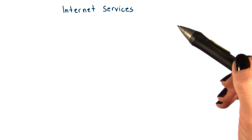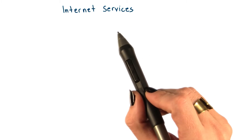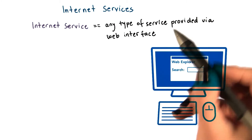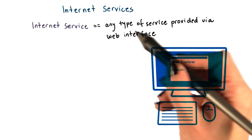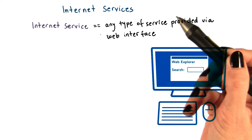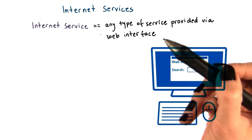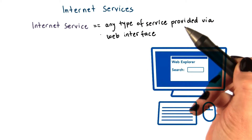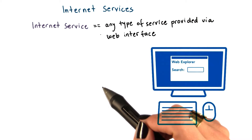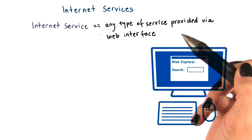In the context of data centers, let's first talk about internet services. An internet service is any type of service that's accessible via web interface — from checking current weather conditions at weather.com, to searching or checking email via Google search and mail services, to making online bank transactions or flight reservations.